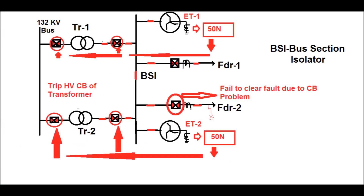Now, what will happen if the circuit breaker associated with feeder 2 fails to clear the earth fault due to a CB pole stuck problem or any other problem? The earth fault current will continue to flow via both earthing transformers — in case the bus section isolator is closed — or via earthing transformer 2 only if the bus section isolator is open. The neutral CT connected in the earthing transformer senses this current and sends a signal to the 50N relay, also called the system backup earth fault relay.